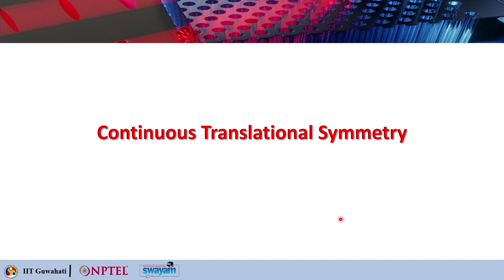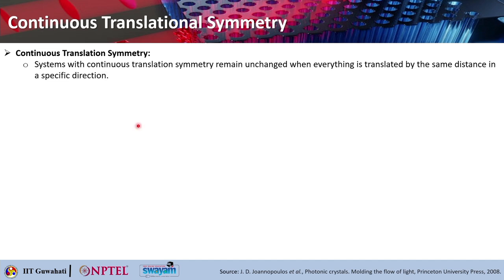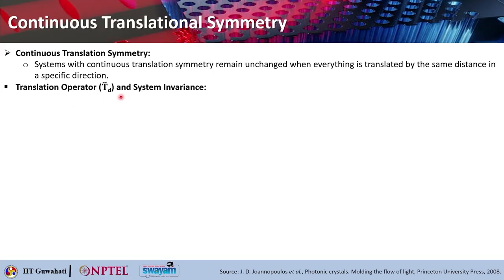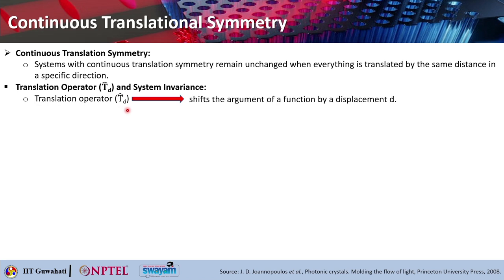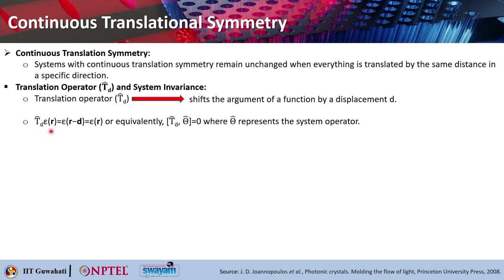Moving to continuous translational symmetry: these are symmetry conditions where the system remains unchanged when everything is translated by the same distance in a particular direction. You can think of a translational operator T̂_d, where applying this operator to a system displaces all functions by d. You can write T̂_d ε(r) = ε(r − d) = ε(r). It means if you move your system by a distance d, the same properties repeat. This represents that the system operator θ̂ and T̂_d commute: [T̂_d, θ̂] = 0.